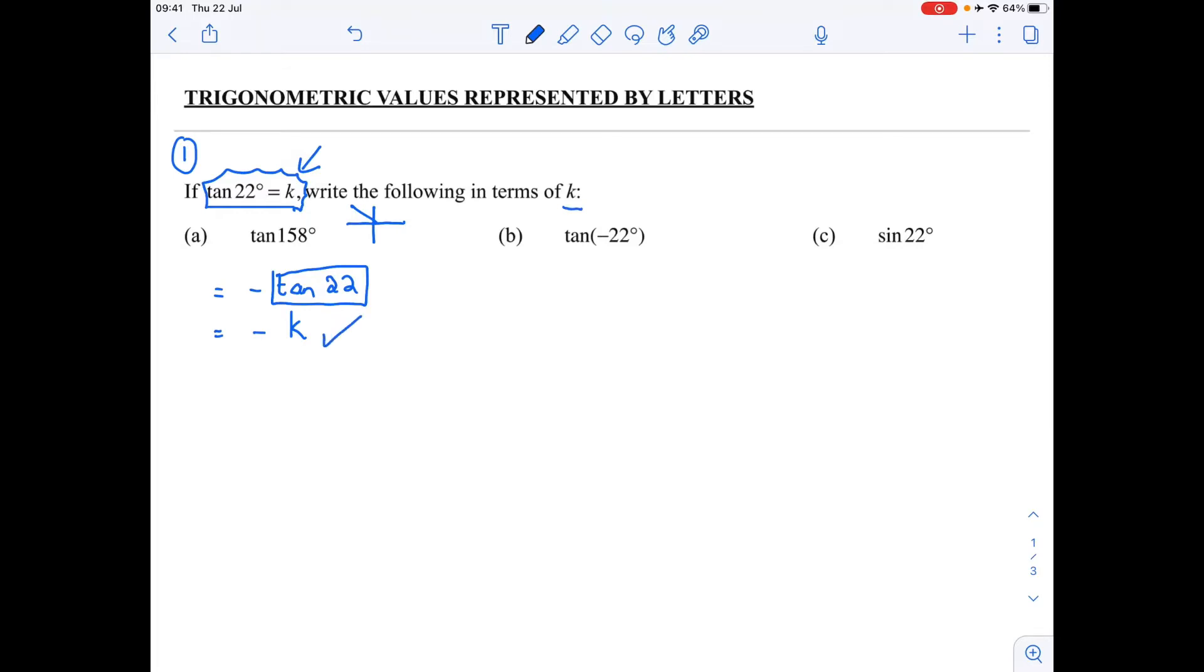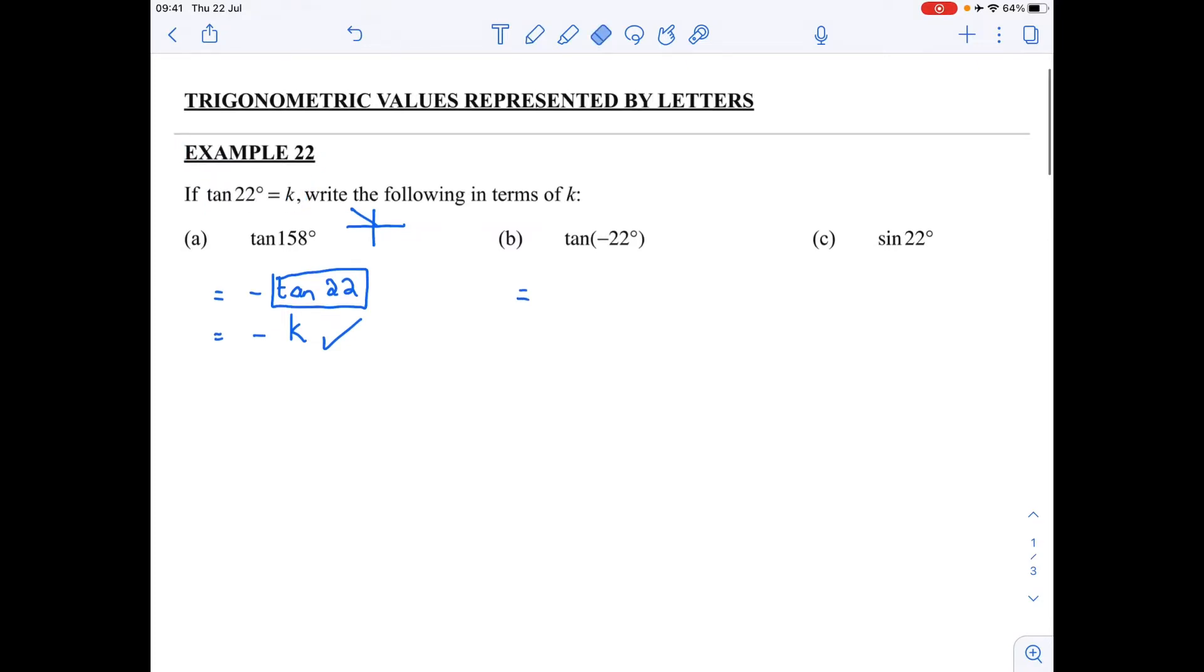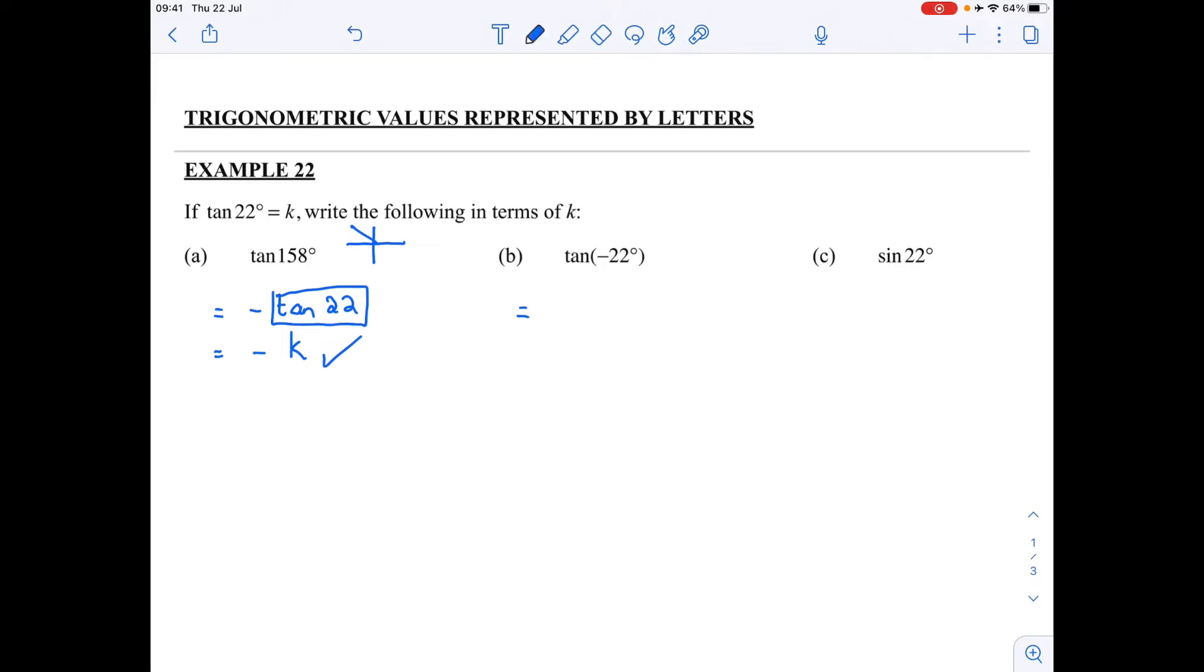If we look at number b, first thing I want to do here is I want to reduce this. And so tan of minus 22, it's going to go this way. So that's in the fourth quadrant and tan is negative there. So that's minus tan 22, which is once again going to be minus k.